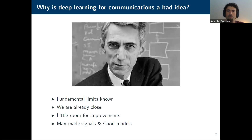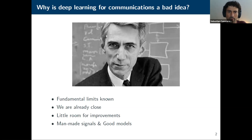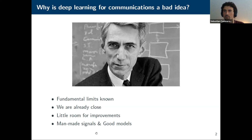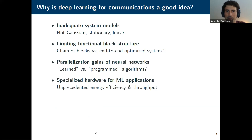In the very beginning, we thought about why deep learning is a good idea, but could only find reasons why it's actually a bad idea to use deep learning for communications. You all know Claude Shannon, who came up with the fundamental limits of communications. Many systems already operate close to these limits, so is there room for improvement? Why apply deep learning if we already have systems that work so well? We also deal with man-made signals, so we have full control of the encoder and very good channel models.